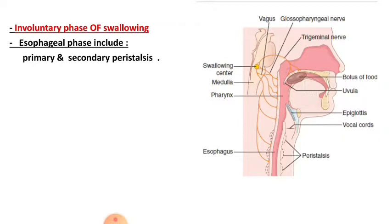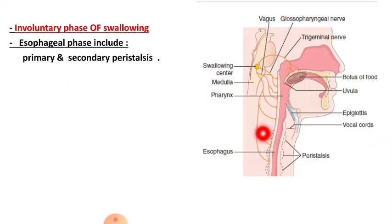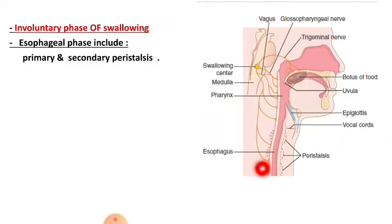Sometimes not all the contents in the esophagus empty, and this will initiate secondary peristalsis. In secondary peristalsis, sensory receptors in the wall of the esophagus are stimulated, and signals are transmitted to the medulla oblongata, then return back through motor fibers via the 10th cranial nerve, causing the secondary peristaltic wave to be initiated in the esophagus.